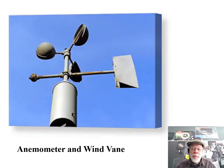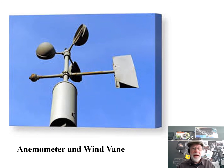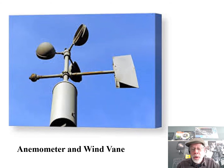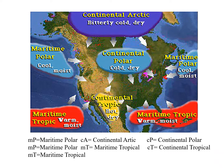Here is an anemometer and a wind vane. You can see the cups on top are going to spin faster in a faster wind. And that wind vane will always point in the direction the air mass is coming from. So in any situation with moving air, we want to know where the air came from, because wherever it came from, it's going to be bringing those conditions to us.